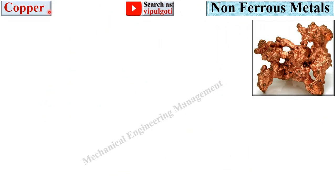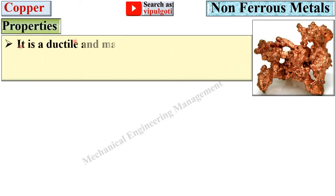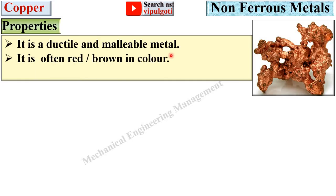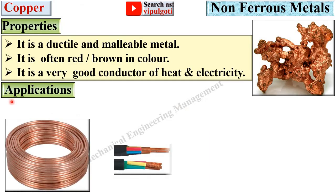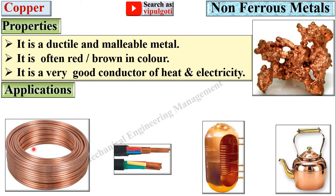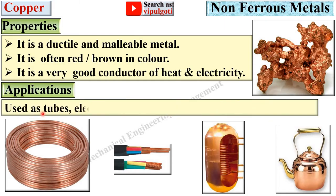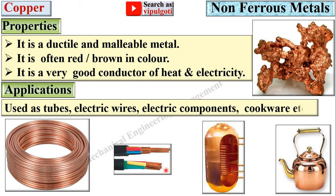Next, copper. Properties: it is often red or brown in colour, and it is a very good conductor of heat and electricity. Applications: used as tubes, electric wires, electric components, and hook wires.